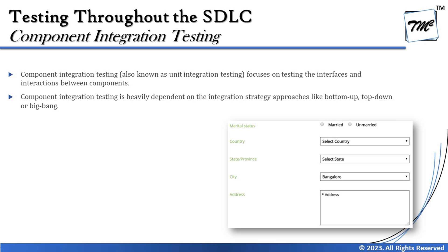Component integration testing is mainly used to test the interfaces or interactions between the components of a system. It is heavily dependent on integration strategy approaches like bottom-up, top-down, or big-bang. Now, what would be a good example to illustrate component integration? It is essentially the interaction between two or more components within an application.